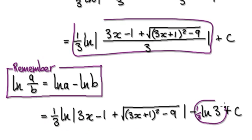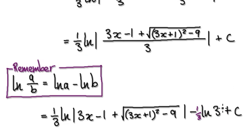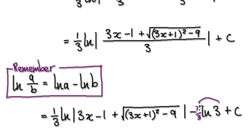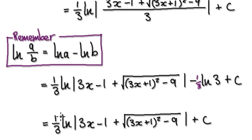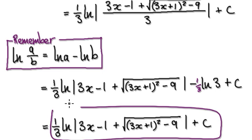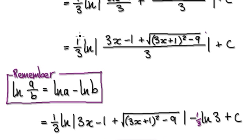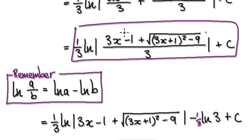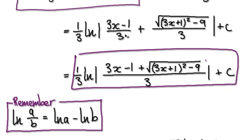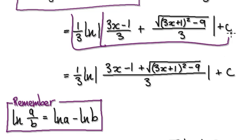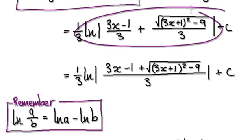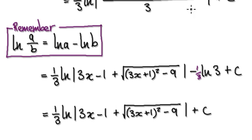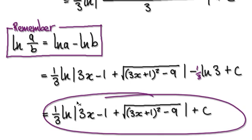But the thing is, this thing here is a constant — natural log of 3 is a constant, it's just a number that doesn't change. And this here is also a constant, so this whole thing is a constant. We can merge it with this constant here. So this whole thing will then become this. We could have left our answer as this thing here, but we can tidy this up. If you tidy up, it will then give you this. So this here is our final answer.